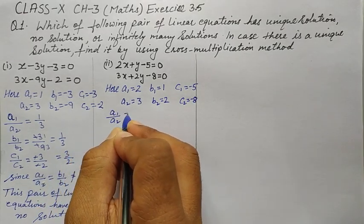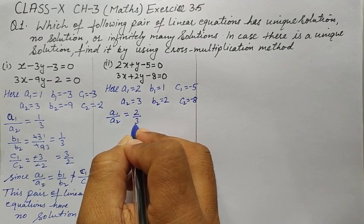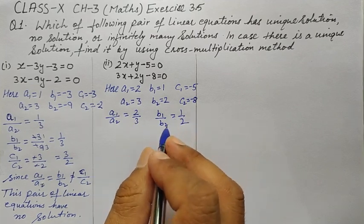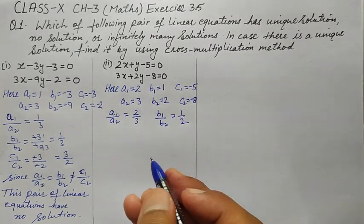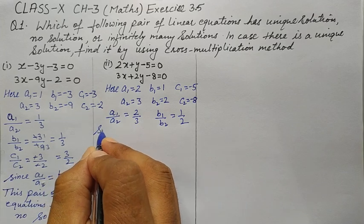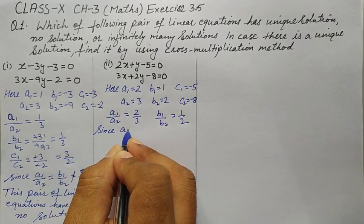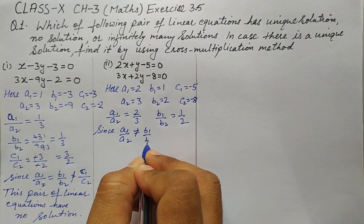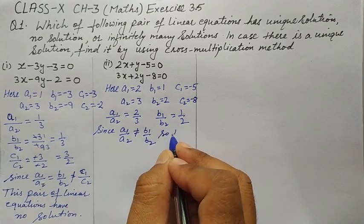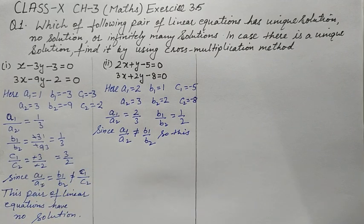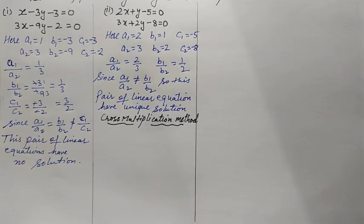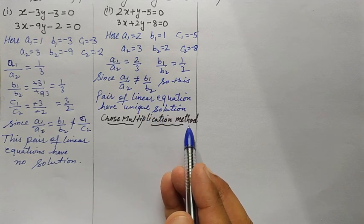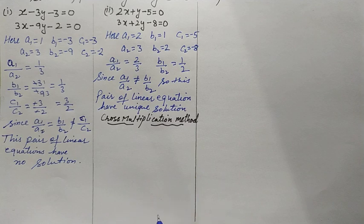Here a1/a2 = 2/3 and b1/b2 = 1/2. Since a1/a2 does not equal b1/b2, we need not find c1/c2. This pair of linear equations has a unique solution. We will find this unique solution using the cross multiplication method.